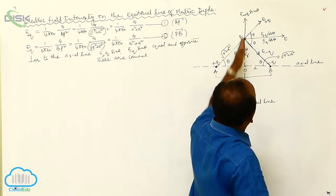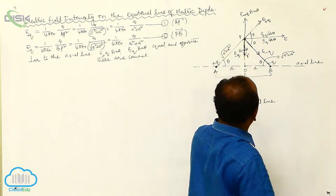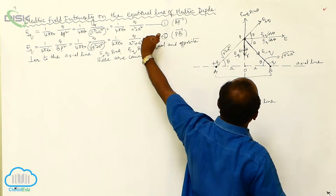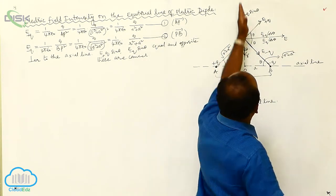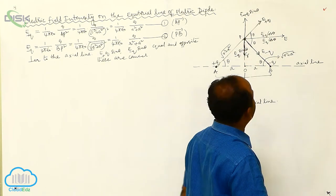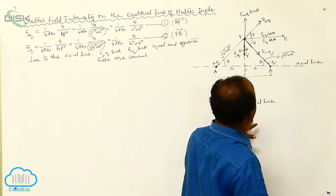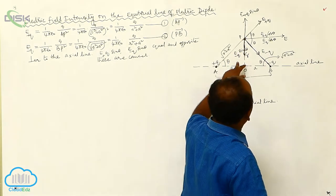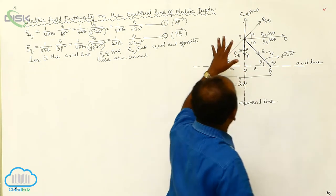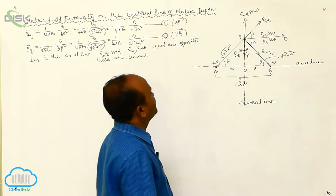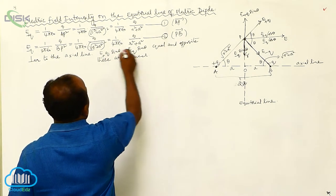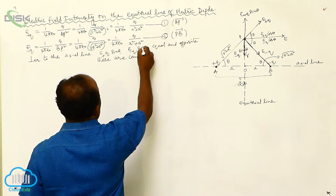This component is perpendicular to the axial line, and this one is parallel to the axial line. Perpendicular to the axial line, EF plus Q sine theta and EF minus Q sine theta are both equal and opposite. Hence, these two are cancelled.